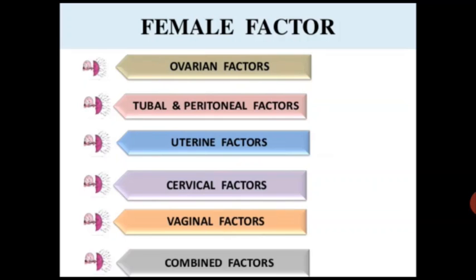Uterine factors include diseases or abnormalities within the uterus. There are also cervical factors — problems related to the cervix — and vaginal factors, which may include psychosexual problems, infection, congenital anomaly, or problems with sperm transport. Combined factors may also be present.